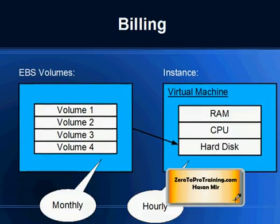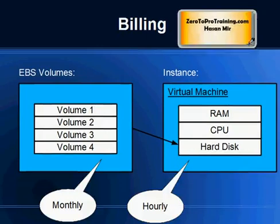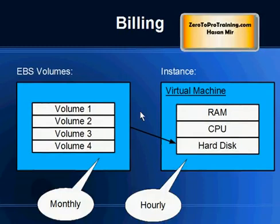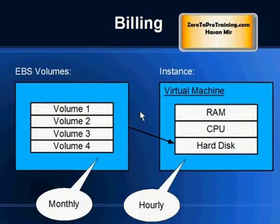Keep in mind that when you create an instance, you are paying an hourly charge. Each instance has different charges — for example, the SAP HANA instance we created costs about three and a half dollars an hour. You can stop the instance anytime to stop incurring those charges. For EBS volumes, you pay monthly, and it's a negligible charge, like 10 cents per gigabyte per month.